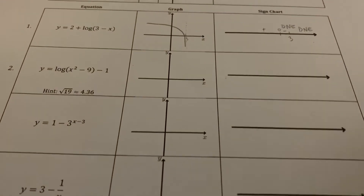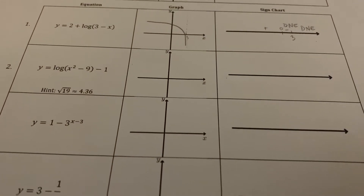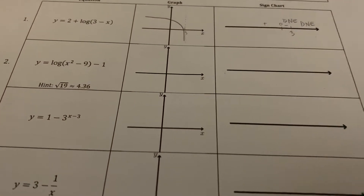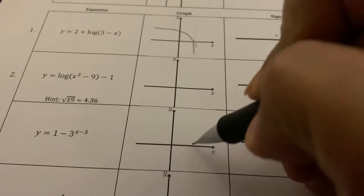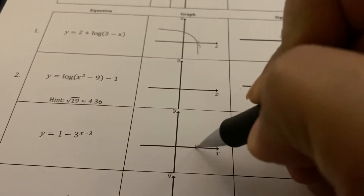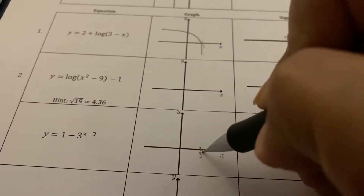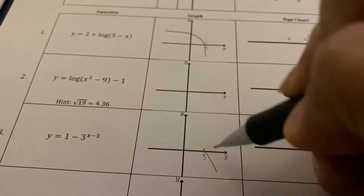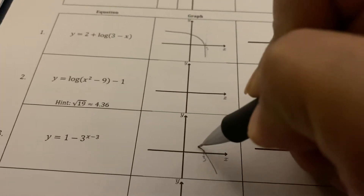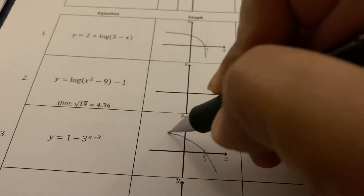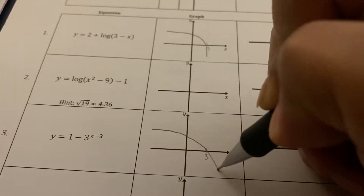For number three, we're going to use decimals again to find the graph. So it looks a little something like this.